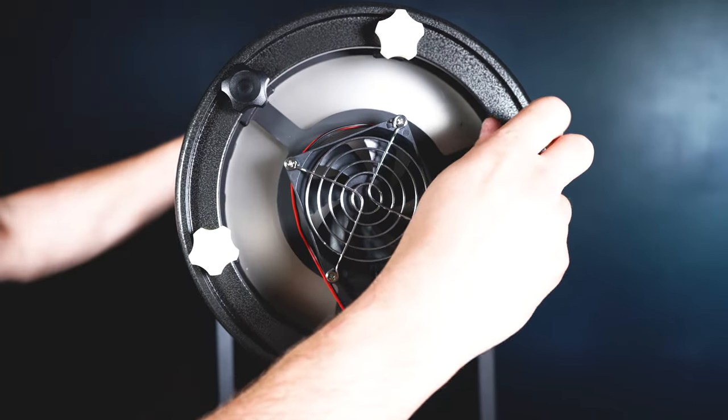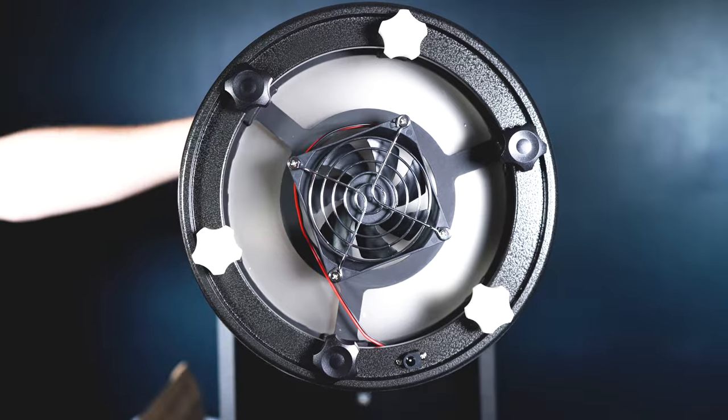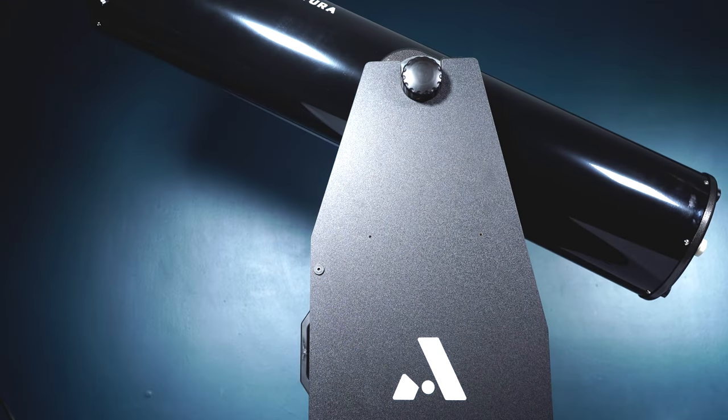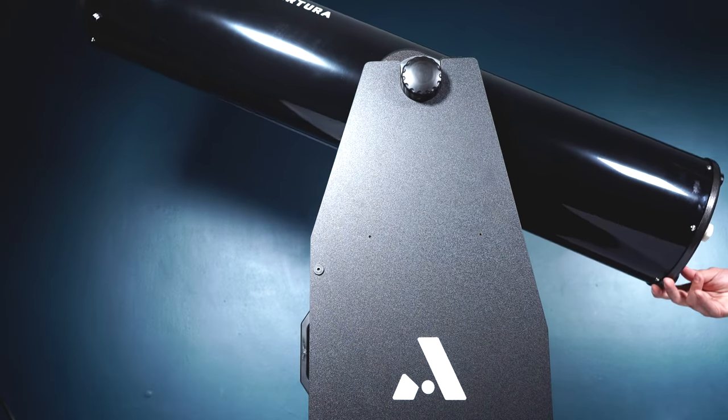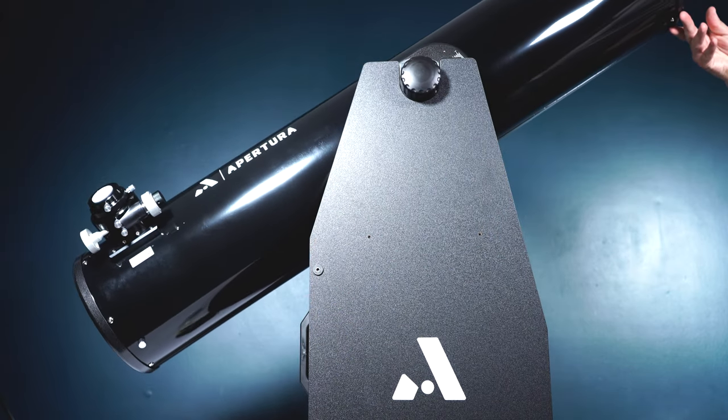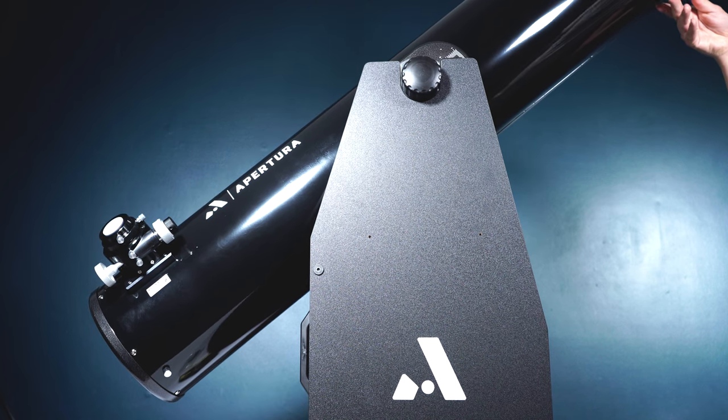Now once each spring has been installed go ahead and tighten up each knob progressively until they are all secure. Alright not too bad so now we are moving on to the final step that's the primary mirror flocking. First and foremost you want to clear a flat space so you can put your primary mirror assembly aside while installing the primary flocking.